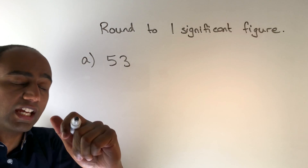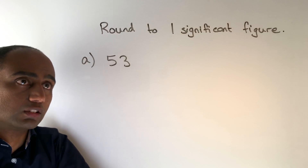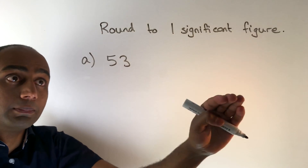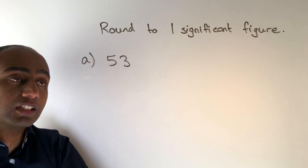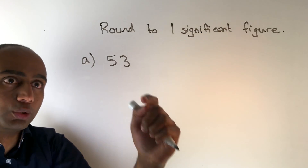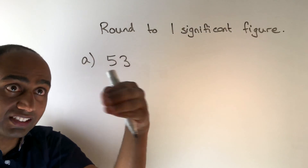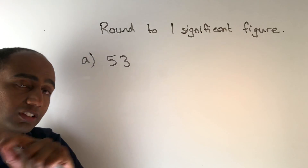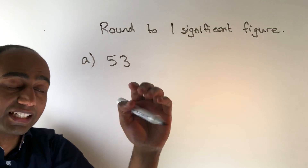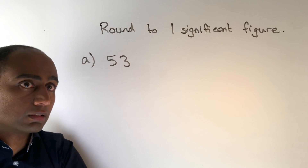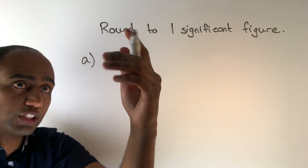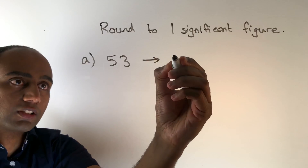In question A we need to round 53 to one significant figure. All it means to round to one significant figure is to round to the biggest place value column. For this number the biggest place value column is the tens column, so we're rounding to the nearest 10. 53 to the nearest 10 is just 50.